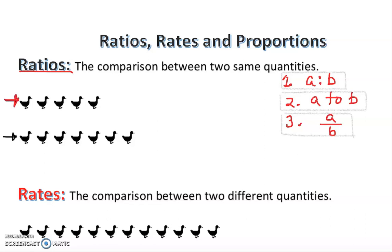This is group one and this is group two. Group one has how many duckies, and group two has how many duckies — we're going to count them. The first group has: one, two, three, four, five — so five duckies. The second group has: one, two, three, four, five, six, seven — seven duckies. So the first group is five and the second group is seven.